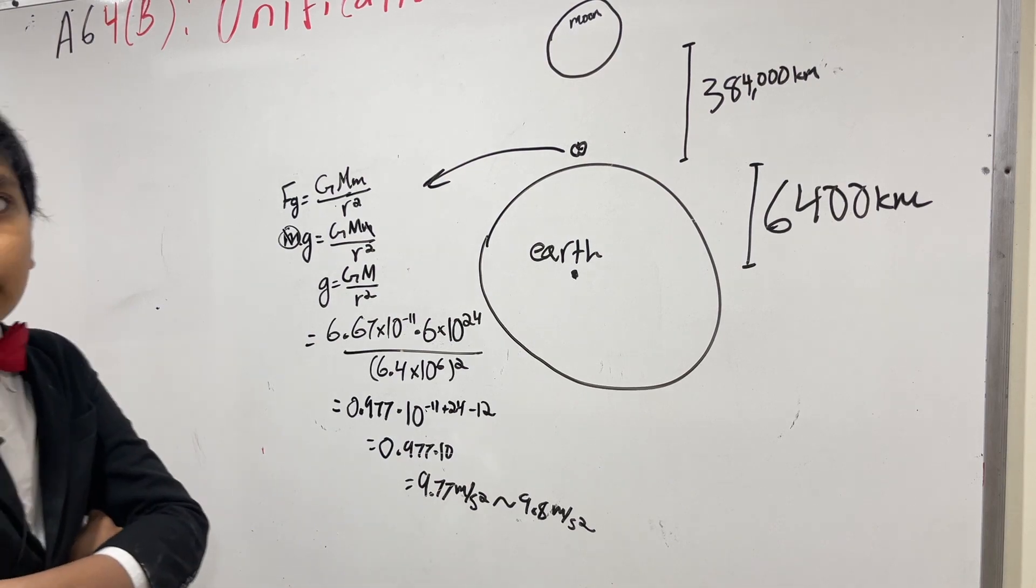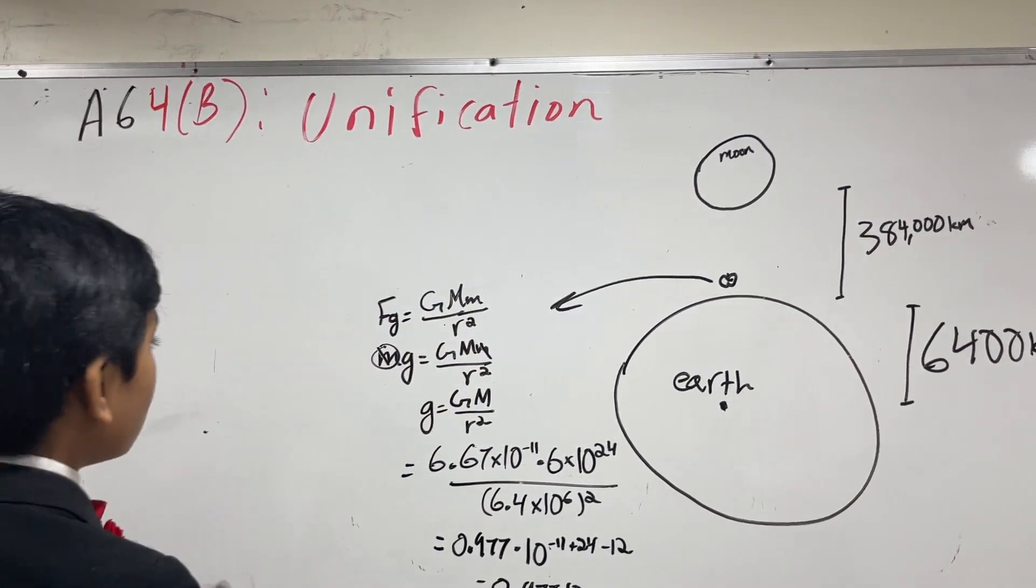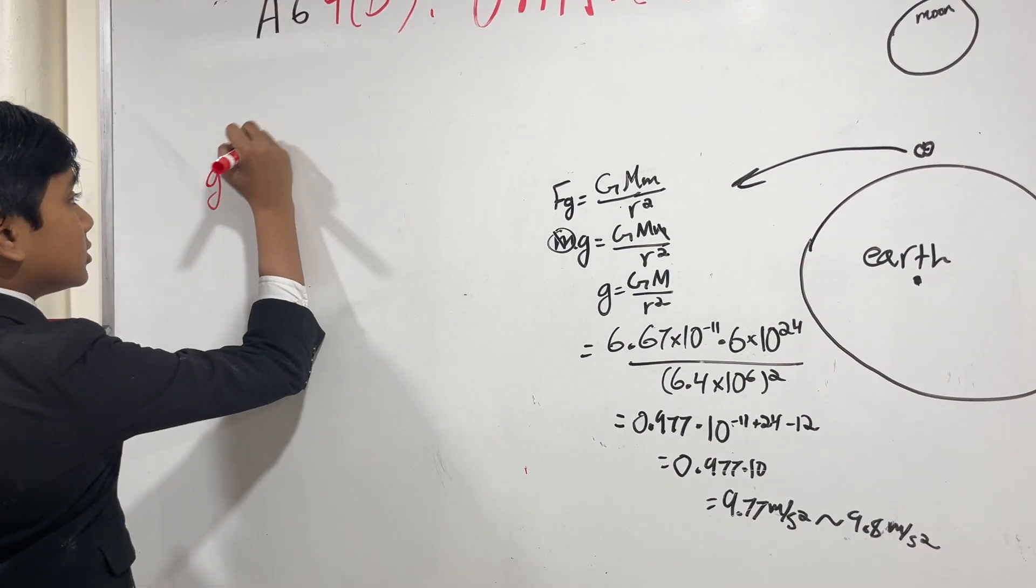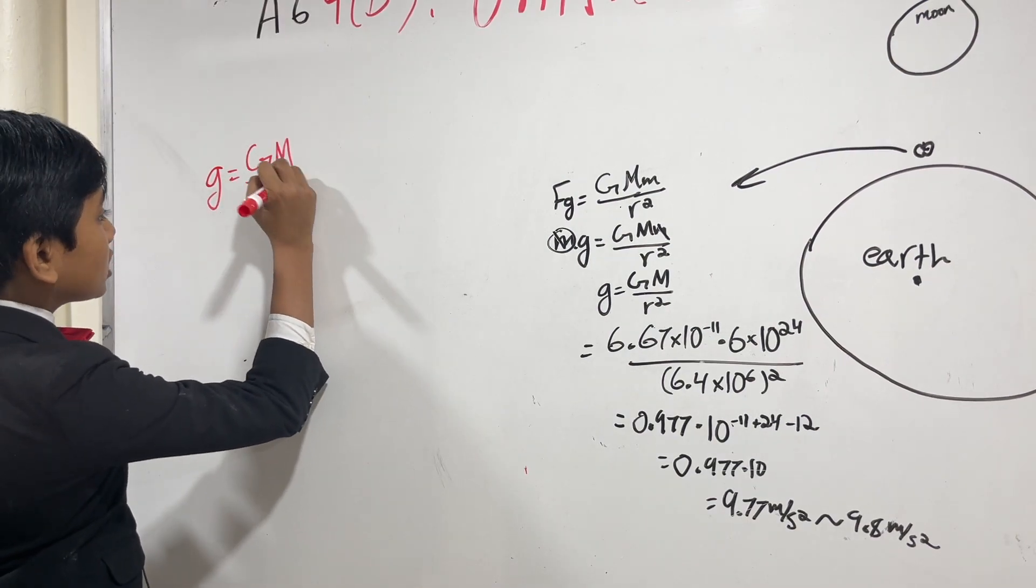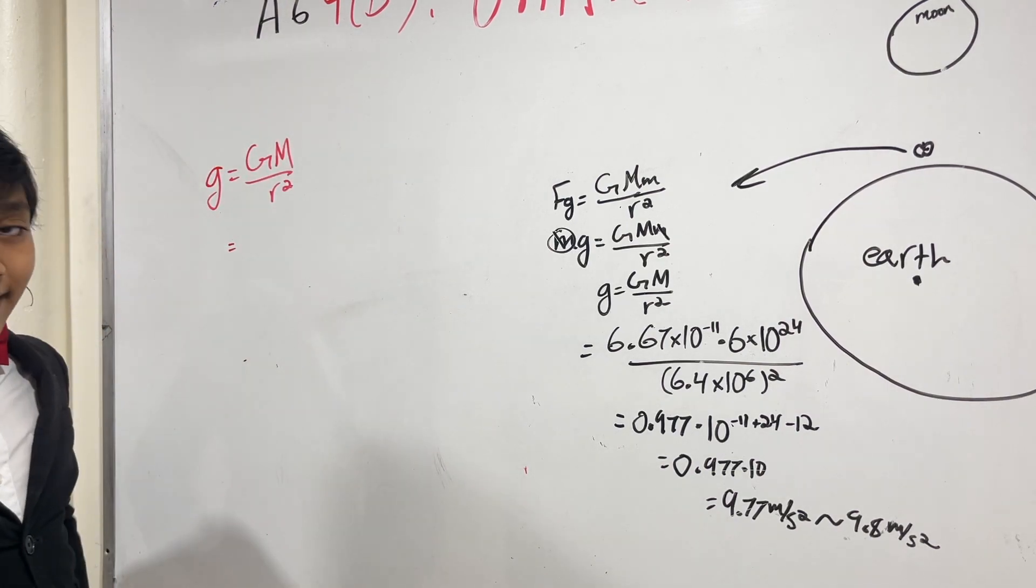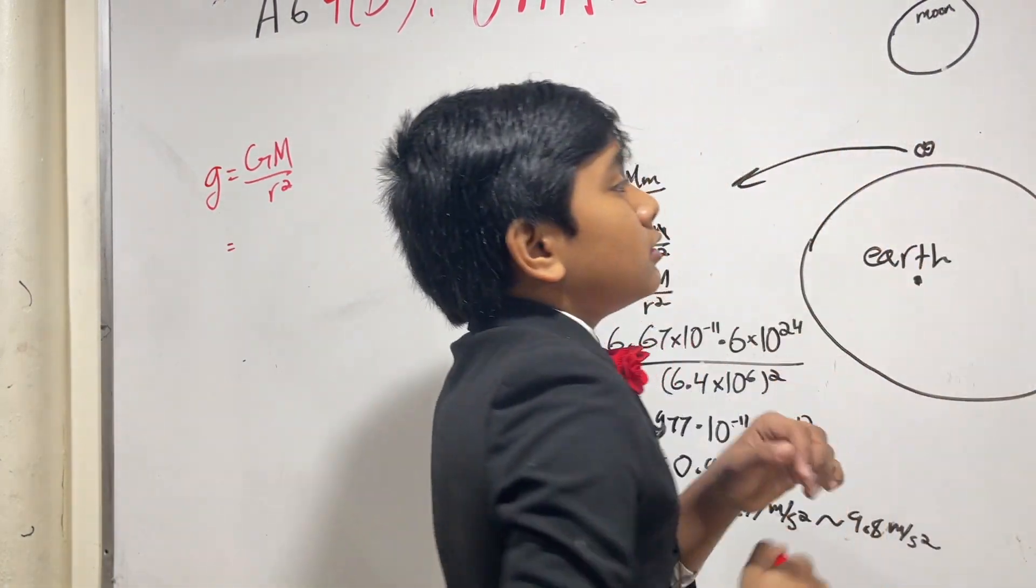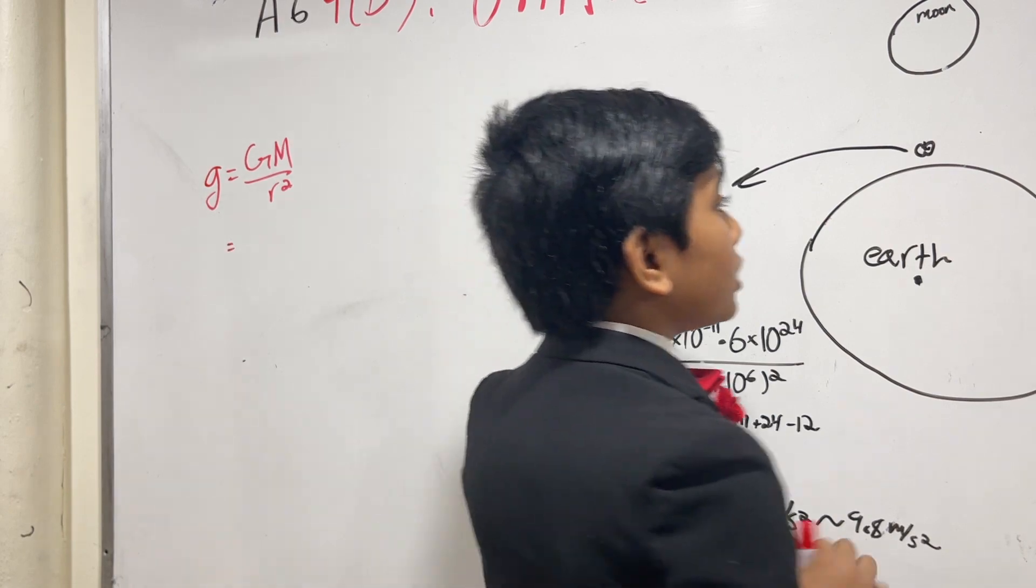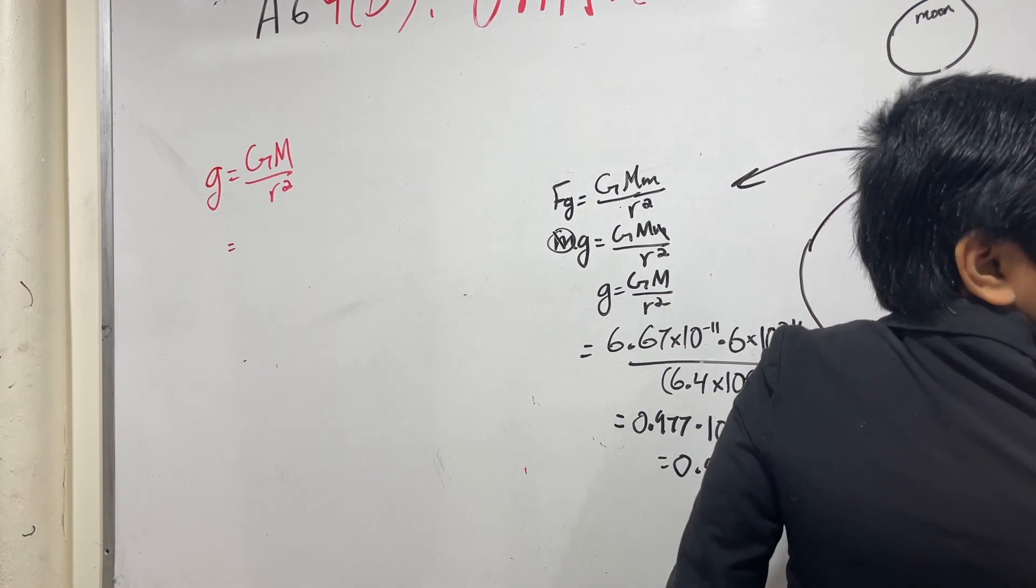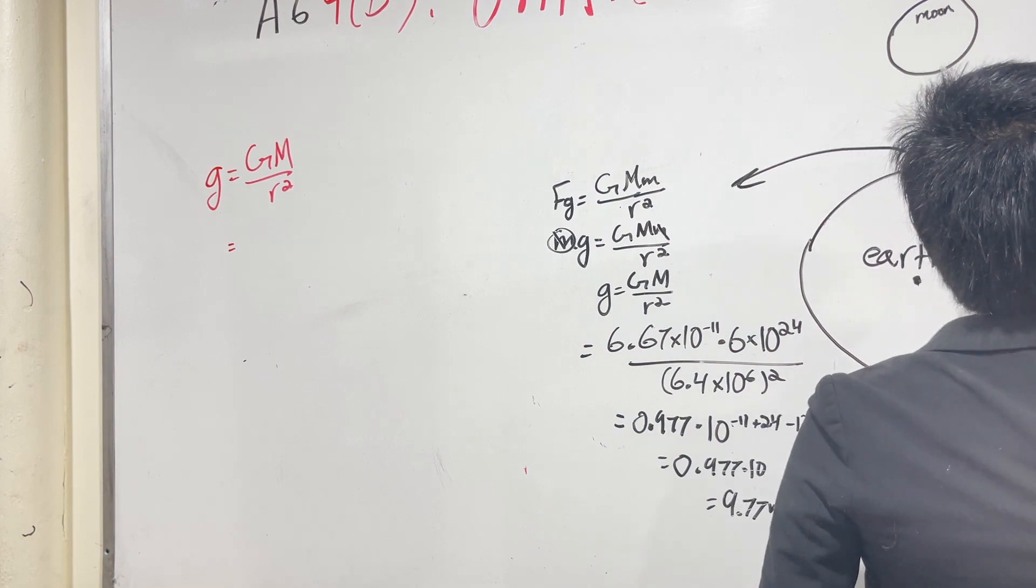But, now, let's try and find how much the moon is accelerating. So, if we wanted to find the moon's acceleration, g is equal to Gm over r squared. Alright, so we're going to use g equals Gm over r squared again. And, if you didn't know, the distance from surface to surface, moon to Earth, is 384,000 kilometers, which when converted to meters, is 3.84 times 10 to the 8th meters. Let's express that in scientific notation.